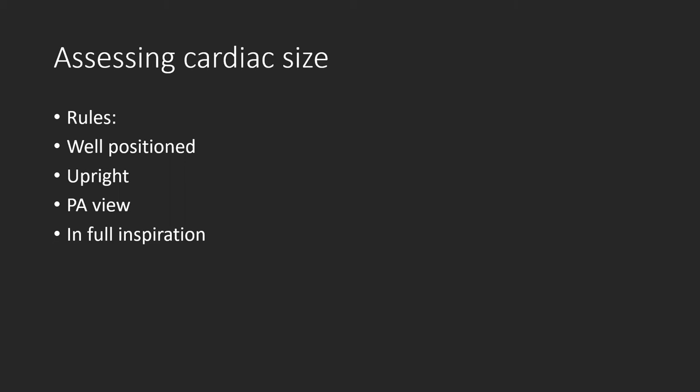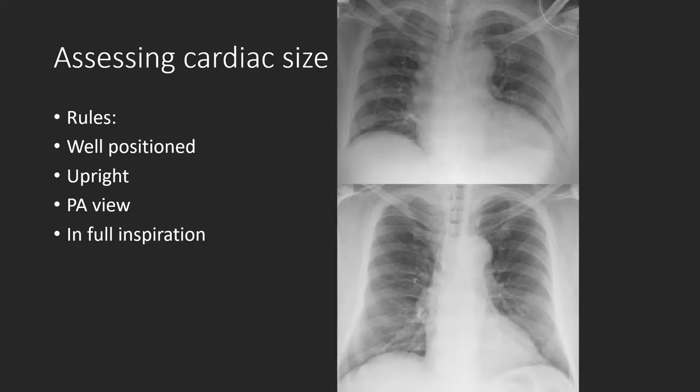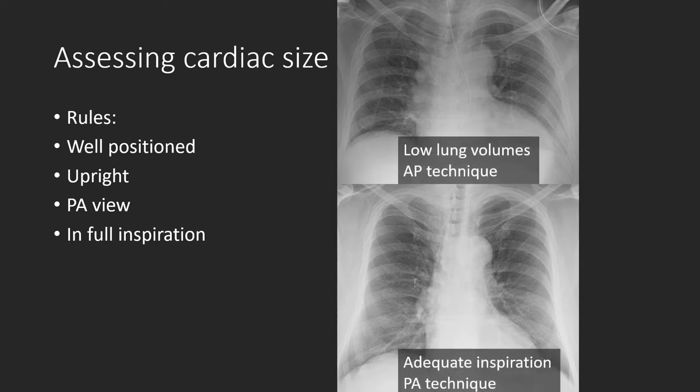This measurement comes with some rules. First, the patient has to be well positioned and not rotated. Second, they have to be upright. Third, it should be obtained as a PA view — posterior to anterior. And lastly, the chest x-ray needs to be acquired during full inspiration. Any of these rules, if not met, could result in pseudo-cardiac silhouette enlargement. Here's an example of a patient with chest x-rays obtained within hours of each other — one with low lung volumes and AP technique, the other with adequate inspiration and PA technique. Look how much the heart changes in size. It's important not to overdiagnose cardiomegaly, particularly on inpatient portable exams, which are almost never upright, PA, or in full inspiration.